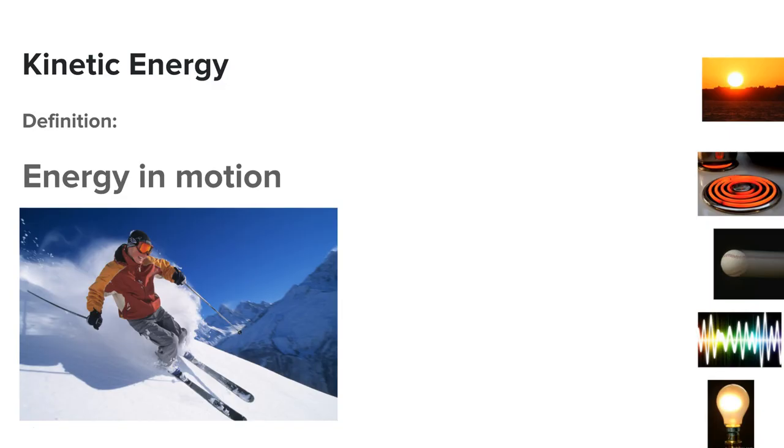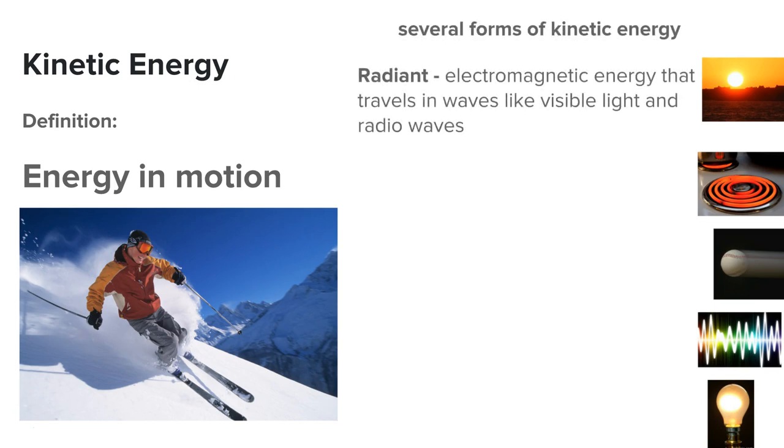There are two types of energy: kinetic and potential. Kinetic energy is energy that's in motion. There are several forms of kinetic energy. The first kind is radiant, rays from the sun, light that travels in waves, visible light, radio waves. So any type of energy that travels in a wave is kinetic energy because it's in motion.